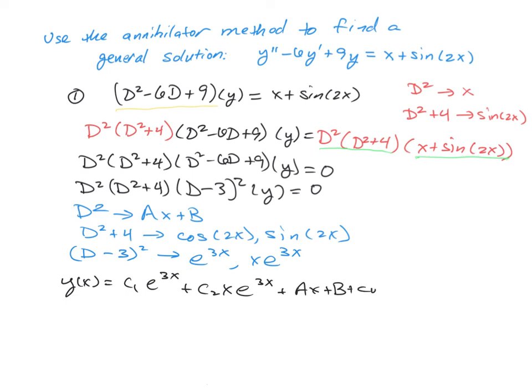And then we're going to have our trigonometric c cosine of 2x and then a capital D sine of 2x.